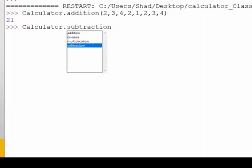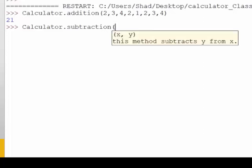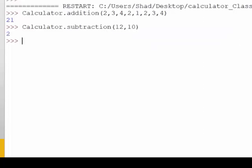You can use the subtraction method as well to subtract one value from the other. So we subtract 10 from 12 and it is 2. And it is the same for the other methods like multiplication and division.